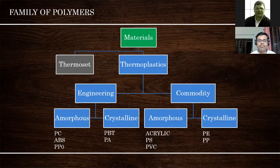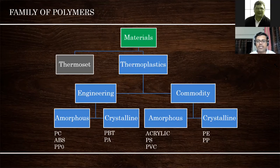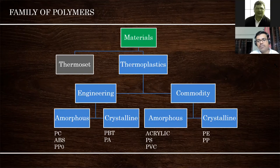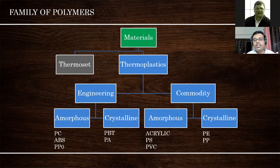Whatever plastic we take, whether commodity or engineering, it has to be divided into two segments: amorphous plastic and crystalline plastic. Examples of amorphous commodity plastics include acrylic (PMMA) and PVC. Crystalline commodity plastics include polypropylene and polyethylene. In engineering plastics, amorphous includes PC, ABS, and PPO; crystalline includes PBT and nylons. This understanding is very important for material selection — first narrow down whether to go for amorphous or crystalline, then dig into multiple raw material grades.